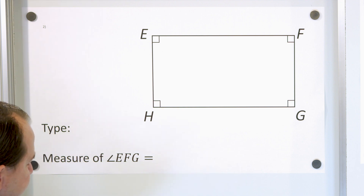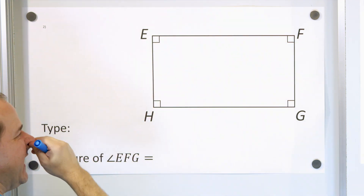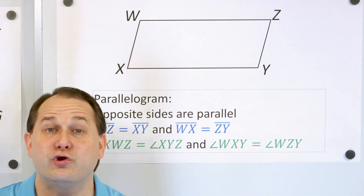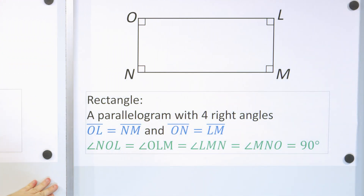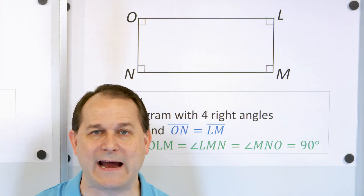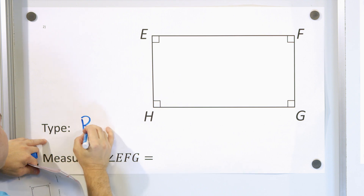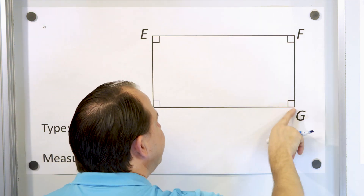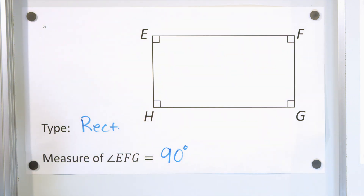Problem number two: here we have this quadrilateral. What type of shape is it? Well, we have parallel sides here and parallel sides here, and this side looks to be the same length as this one, and this one the same as this one — that looks like a parallelogram. You could say it's a parallelogram, which is true, but it's a special parallelogram — the type we call a rectangle, which is a parallelogram that has four right angles in the corner, making the sides straight up and down. So this shape is more specifically called a rectangle. The measure of angle EFG — you see the square symbol means it's a 90-degree angle, so we know it's 90 degrees.